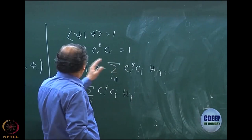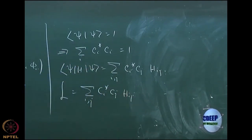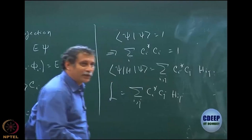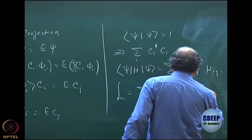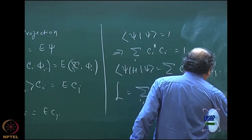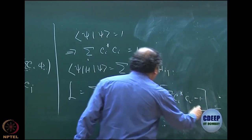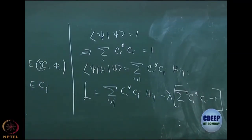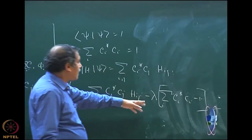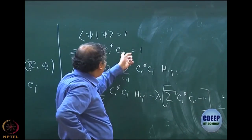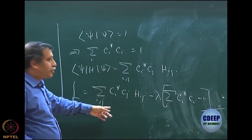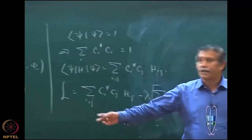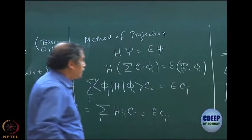You have to write a Lagrangian: sum over i,j C_i star C_j H_ij minus lambda times (sum over i C_i star C_i minus 1). Remember: whenever you write the Lagrange multiplier, make the equation equal to zero and write the left-hand side. You vary with respect to C_i and lambda. Varying with respect to lambda gives back the normalization condition, which is trivial.